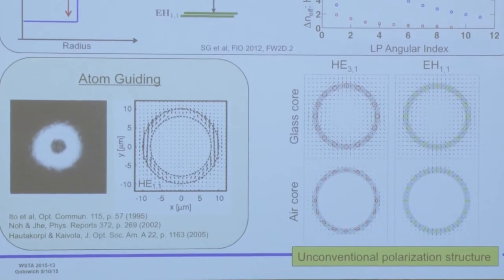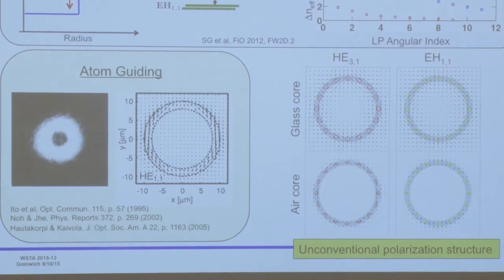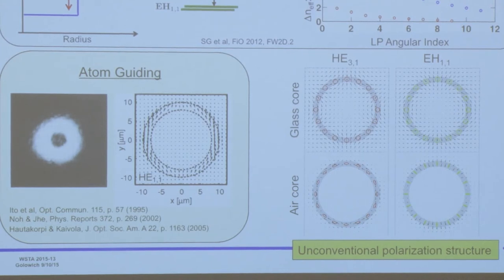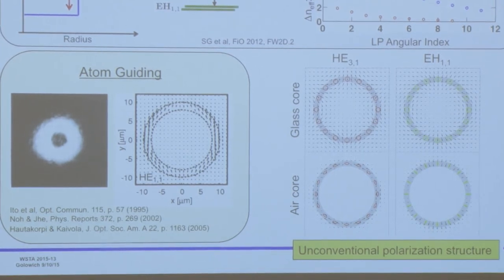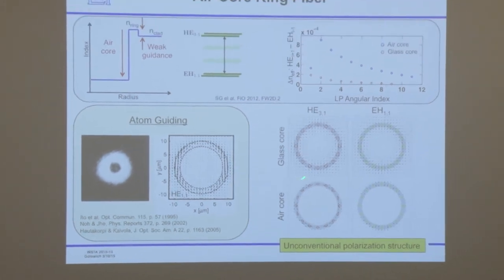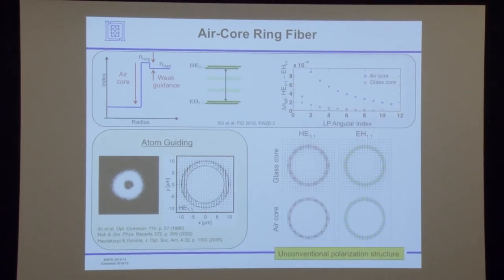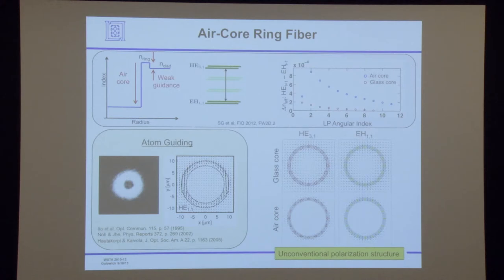If you look at the glass-core fiber it has the same polarization structure seen in the lower-order original vortex fiber, which you see in all conventional weakly guided fibers: you get circularly polarized polarization states. But with this air-core fiber, we're seeing polarization states that are elliptical — actually highly elliptical — and the ellipses rotate as you go around the fiber, so it's not spatially invariant. That makes for a puzzle as to why this is happening. It also makes for an experimental problem: you can't just stick a circular polarizer in front of this to launch these beams. It's a much harder, more delicate experimental problem. I'm going to be addressing the resolution to this puzzle in the rest of the talk.